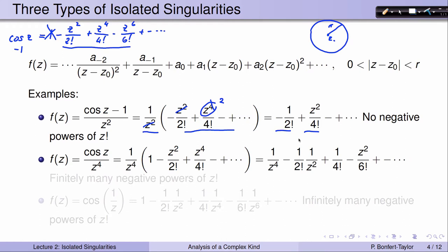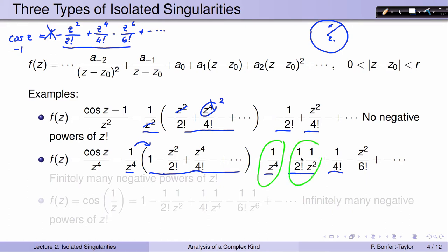Let's look at another example: the function cos(z) over z⁴. I have my series for cos(z) and I'm going to divide that by z⁴, distributing z⁴ into the parentheses. So I find 1 over z⁴ minus z² over z⁴, which is minus 1 over (2 factorial · z²), and then z⁴ over z⁴ cancels out, so I have plus 1 over 4 factorial, and so forth. In this example, I have some negative powers of z — 1 over z⁴ and 1 over z² — and then lots of positive powers of z. So I have finitely many negative powers of z in this particular example.